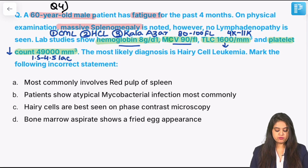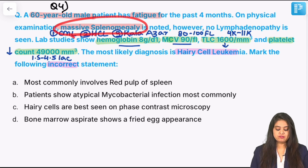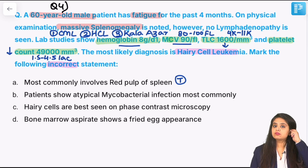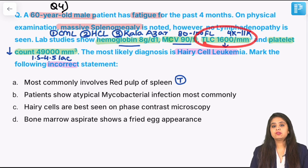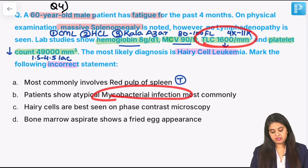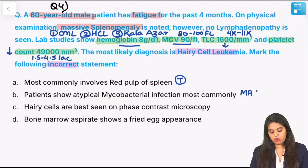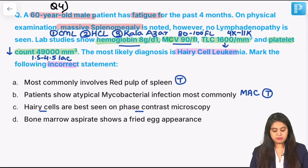With a diagnosis and suspicion of hairy cell leukemia, they asked you to mark the incorrect statement. Hairy cell leukemia features massive splenomegaly and involves the red pulp of the spleen. The bone marrow is not producing many white blood cells, so infections occur — most commonly atypical mycobacterial infections, especially Mycobacterium avium complex. Because it's hairy cells, the best microscope on which you see them is the phase contrast microscope.